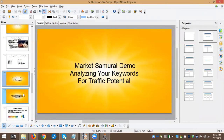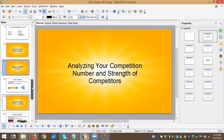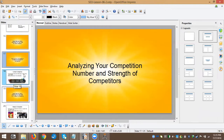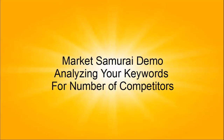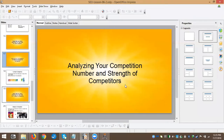The number of visitors only tells part of the story. We also need to look at the strength of competitors. First: how many competitors are there? Naturally, the fewer people competing with you, the greater chance you have of reaching a top 10 spot. It's best to pick keywords with fewer competitors. Think of it like a race: would you have a better chance of winning against 100 people or against just 10? If it's 10 people, your chance is 1 in 10; if it's 100, it's 1 in 100.